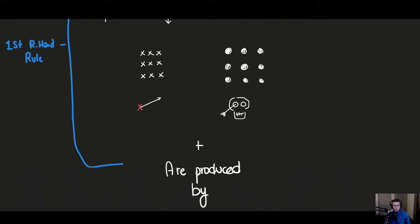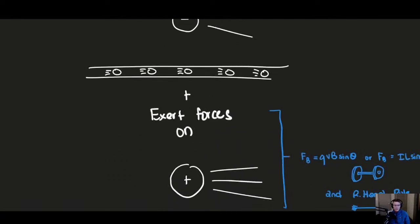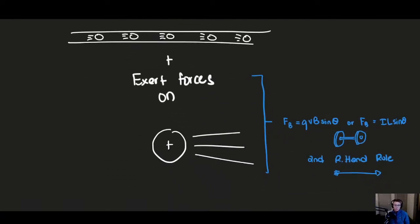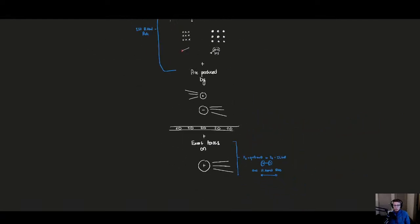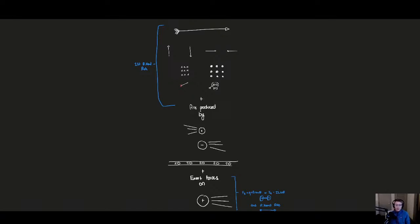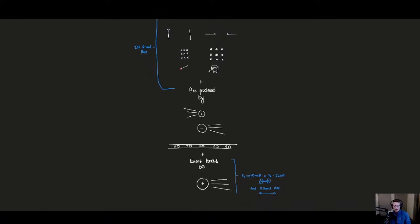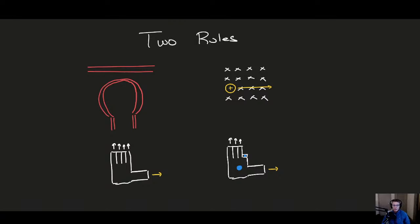We're not going to talk too much about fields produced by moving charges — that's just the equations. They also exert forces on other moving charges, and this is where we get into the distinction between the two right-hand rules. The first right-hand rule describes the magnetic field direction. The second right-hand rule describes the force that a magnetic field exerts on a moving charge. This is where people usually get a little lost. I apologize — I can't really draw hands — but bear with my poor drawings.